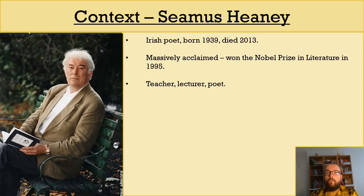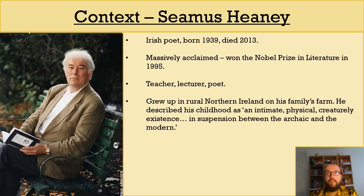Heaney was a trained teacher, lectured at universities, and was, of course, a poet. He grew up in rural Northern Ireland on his parents' farm. His upbringing can be seen across his poetry, in the people, places and events it features. Heaney described his childhood as an intimate, physical, creaturely existence, in suspension between the archaic and the modern, in his Nobel Prize lecture. The idea of his childhood being physical and creaturely is especially relevant to this poem, I think.